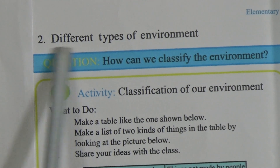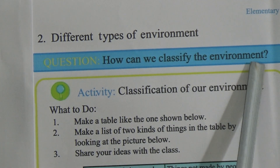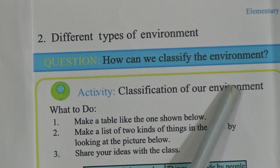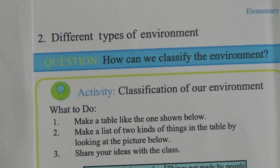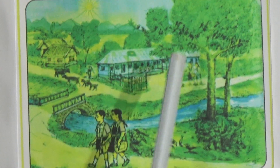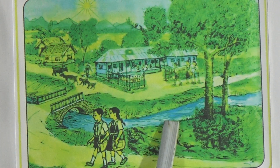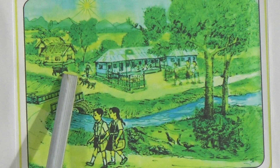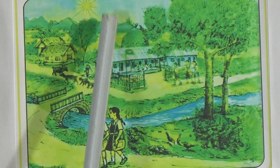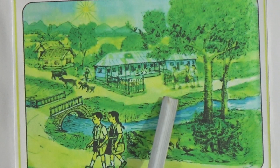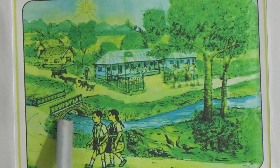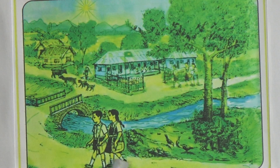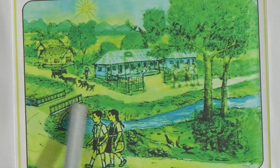Now come to different types of environment. The question arises: by seeing the different types of environment, how can we classify the environment? As I mentioned, some things are natural, some things are man-made, some things are living, some things are non-living. In this picture, there is a boy and a girl — they are students, they are living things made by nature. Plants, water, cattle (cows and goats), sun, hills, and soil are all made by nature. But the school, houses, bridge, and the bag carried by the students are all made by people.